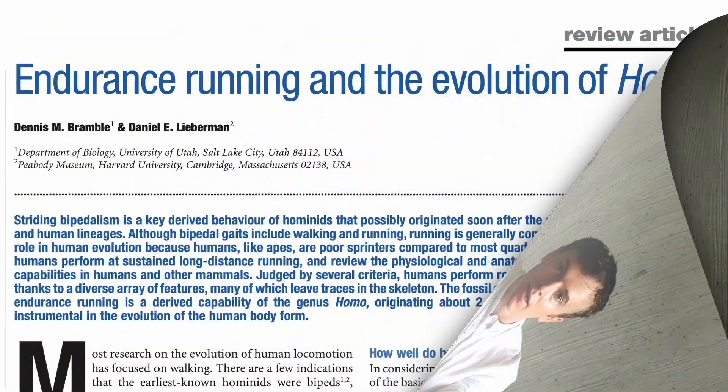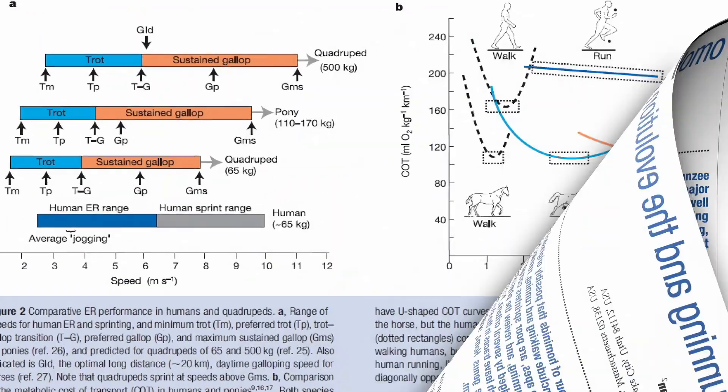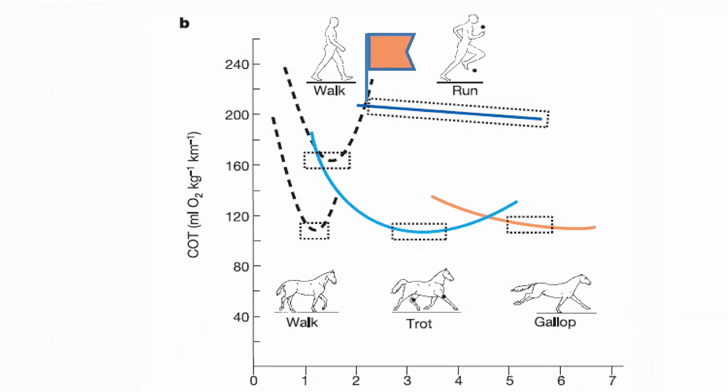Once we reach walking gait speeds of around 2.3 to 2.5 meters per second, an important transformation occurs. It becomes more efficient to adopt a new motor pattern: running gait. This speed threshold corresponds to the intersection of the cost of transport curves for walking and running. Basically, in line with what I've been saying about considering gait through a lens of efficiency, we start running when it becomes more efficient to do so than walking.